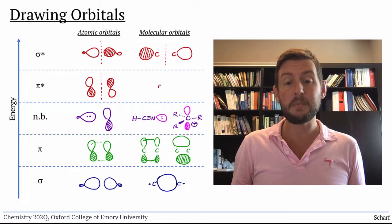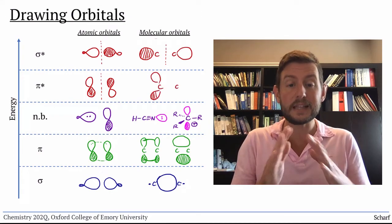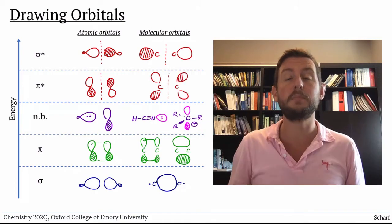Pi-star orbitals are typically drawn like this, slightly angled away from the area between the two nuclei.